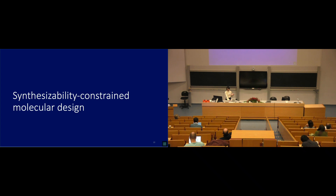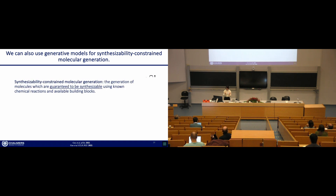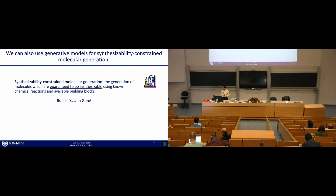I want to talk about synthesizability-constrained molecular design, since that's an area frequently neglected in generative AI. It's very fun to generate molecules, but very few people want to constrain them to only synthesizable ones. Synthesizability-constrained molecular generation is the generation of molecules guaranteed to be synthesizable using known chemical reactions and building blocks. This is very important because it builds trust in your AI — if you show a chemist a bunch of molecules where they can see that none of them can be made, they're not going to trust the model.